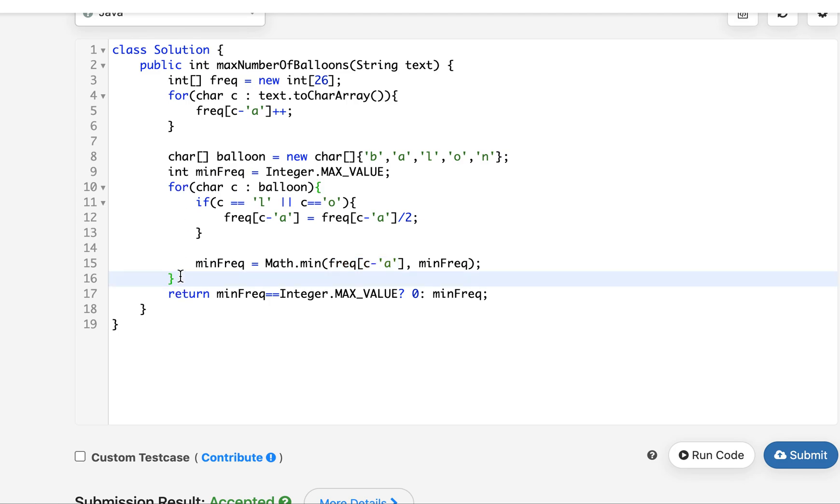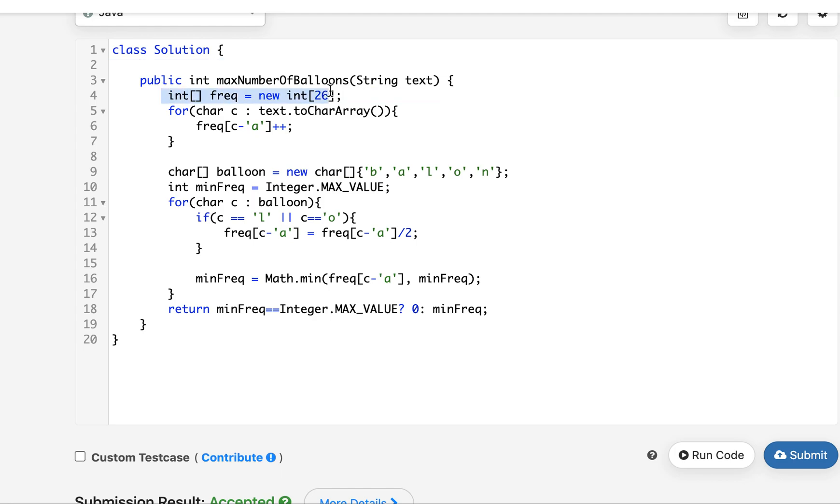Then I go ahead and pick the minimum frequency out of the complete input array. Once I'm done with this loop, I compare it with the maximum value. If it still happens to be the maximum value that means the answer does not exist and I simply return 0. Otherwise, I return the minimum frequency that was present in the frequency array. The time complexity for this approach is the length of the input string and the space complexity is constant because we are using the fixed set of array for calculating the frequency.